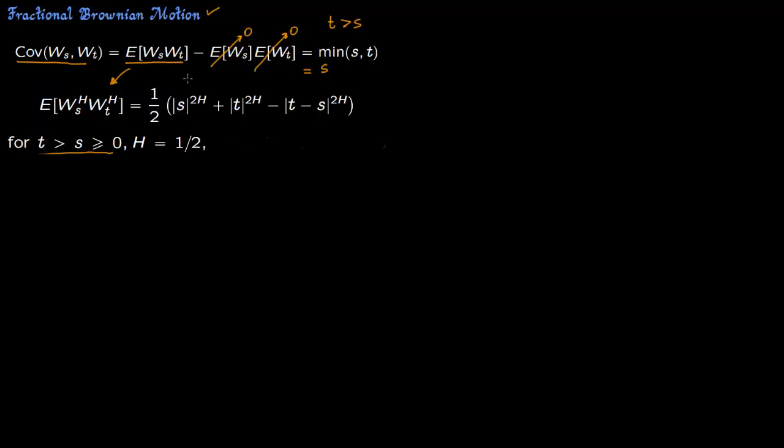So if you set h equals to half, this will be s, this will be s, this will be t, this will be minus t plus s. So you have 2s divided by 2. So you get the covariance of Ws and Wt as s.